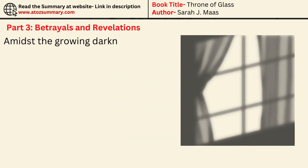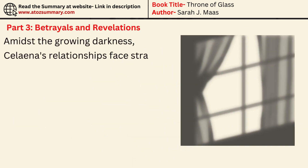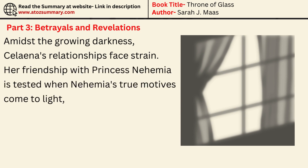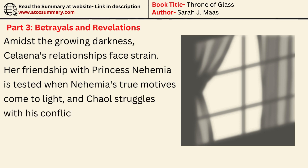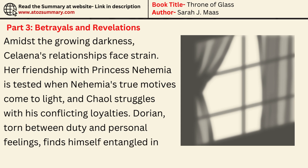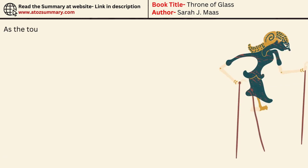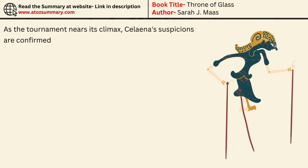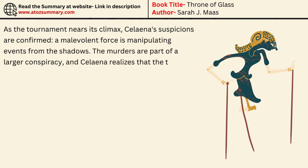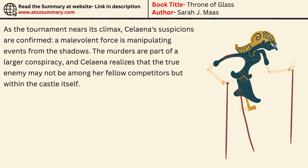In Part 3, amidst the growing darkness, Selina's relationships face strain. Her friendship with Princess Nehemia is tested when Nehemia's true motives come to light, and Kale struggles with his conflicting loyalties. Dorian, torn between duty and personal feelings, finds himself entangled in a web of political intrigue. As the tournament nears its climax, Selina's suspicions are confirmed — a malevolent force is manipulating events from the shadows. The murders are part of a larger conspiracy, and Selina realizes that the true enemy may not be among her fellow competitors but within the castle itself.